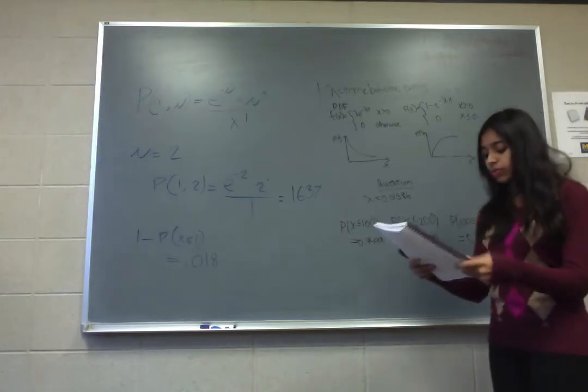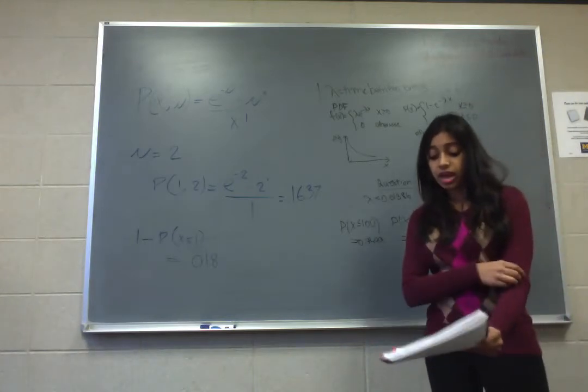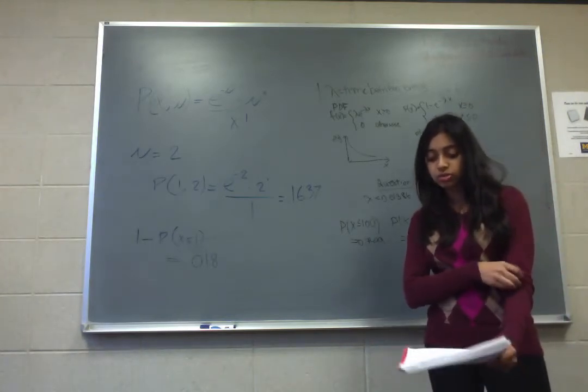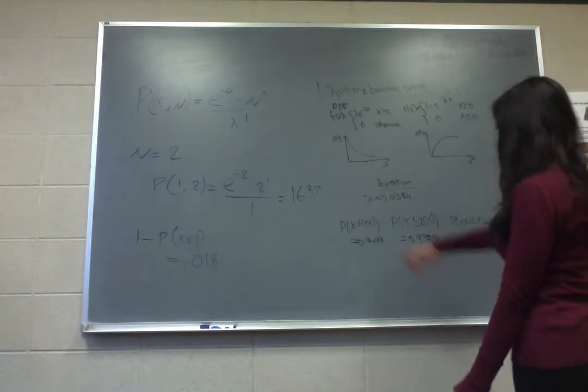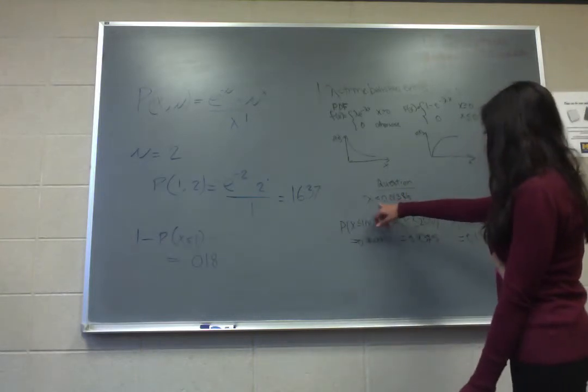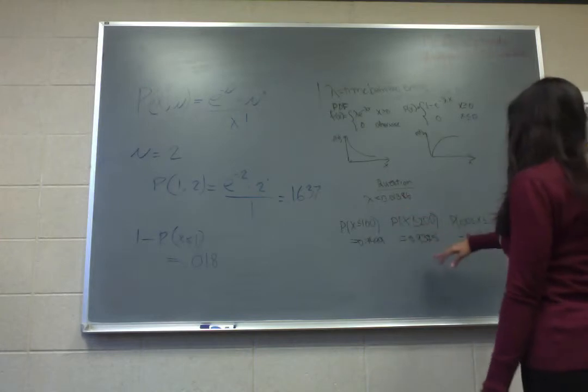To move on to a question: let x denote the distance an animal has to move from its birth site to its first territorial vacancy. Assume you are given lambda equals 0.0138386.